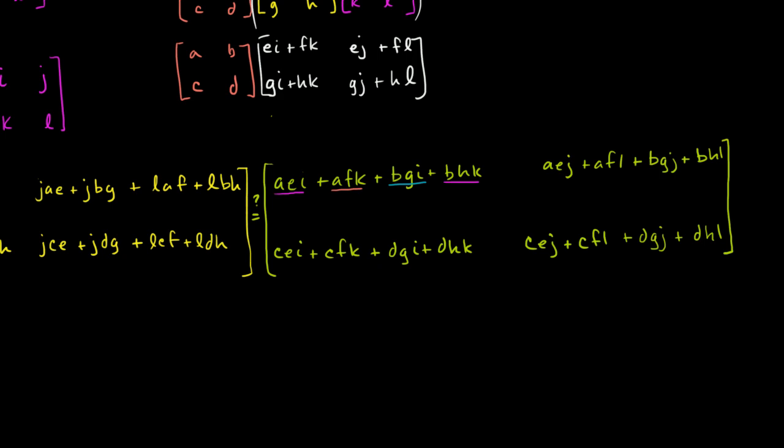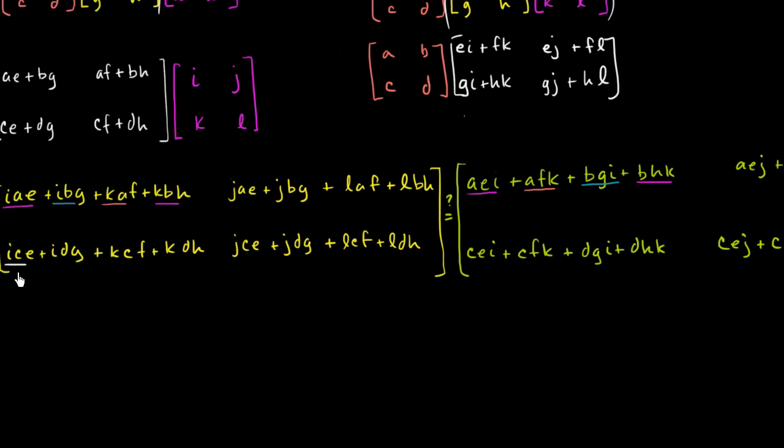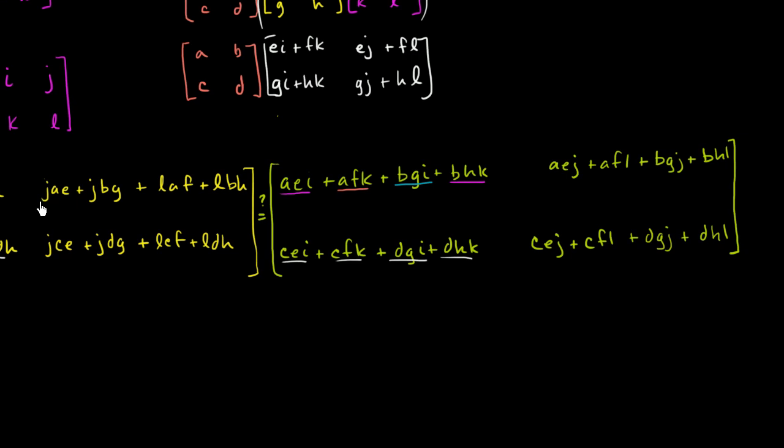So let's do, so ICE is the same thing as CEI. IDG is the same thing as DGI. KCF is the same thing as CFK. KDH is the same thing as DHK. And we go to the second columns. JAE, AEJ. JBG, JBG is the same thing as BGJ. LAF is the same thing as AFL. And LBH is the same thing as BHL. And then finally, JCE is the same thing as CEJ. JDG is the same thing as DGJ.